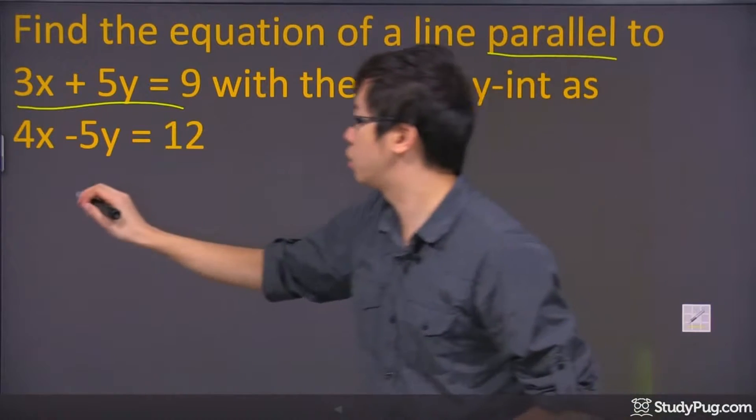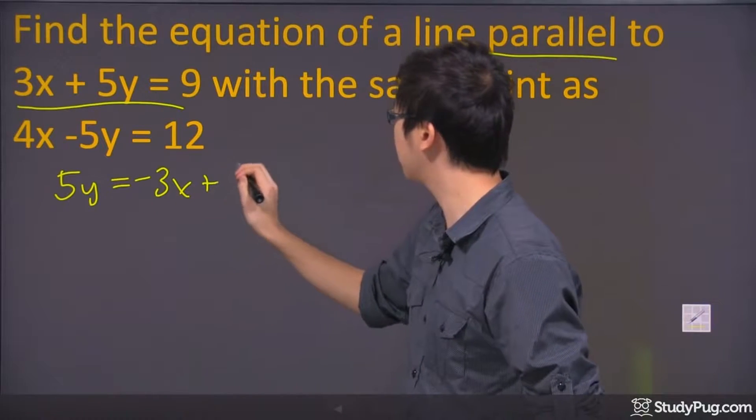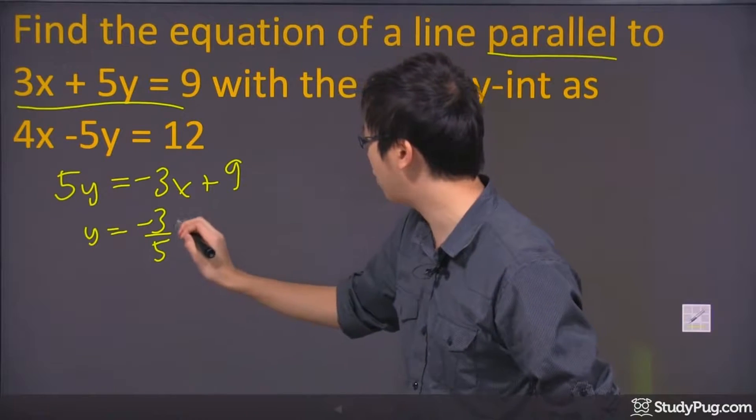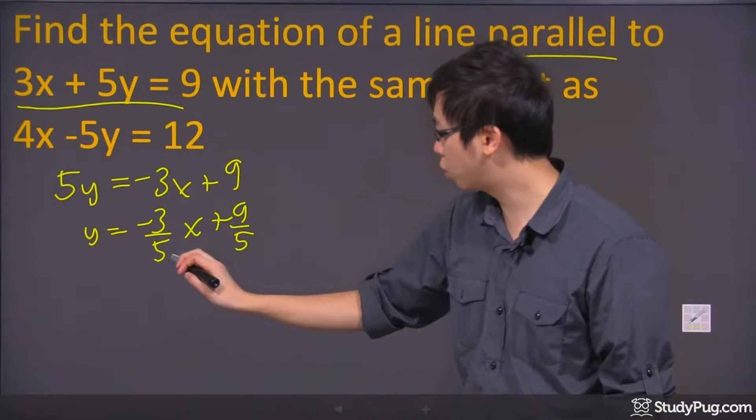Find that equation in terms of y equals mx plus b, right? So solve for y. I'm going to move these guys over here. Now y would equal negative 3 over 5x plus 9 over 5. Now don't worry about this part here, just worry about the slope.